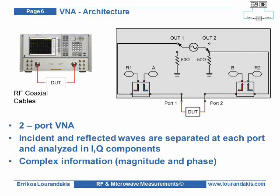From the ratio of reflected to incident wave, the reflection parameter S11 is calculated. The transmitted wave that passes through the DUT is coupled out by the bidirectional coupler at port 2 and detected at receiver B. From the ratio of transmitted to incident power, the transmission parameter S21 is calculated. In the reverse direction, the internal source is switched to port 2, while port 1 is terminated with 50 ohms. In the same way, the reflection parameter S22 and transmission parameter S12 are calculated at each frequency point, completing the S-parameter measurement at both analyzer ports.